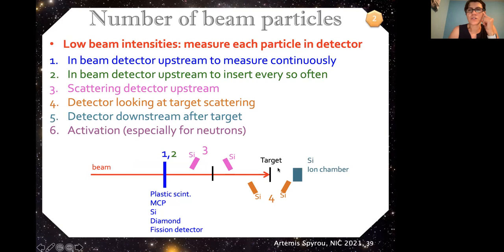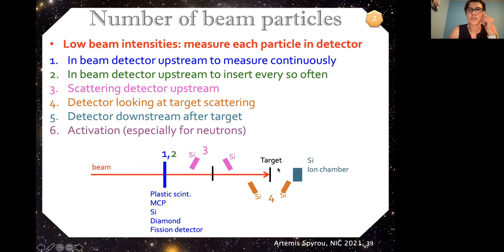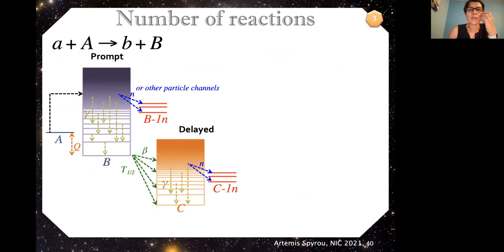And you could also do activation, especially when we're dealing with neutrons, either with your target itself, or you put a foil upstream or downstream from your target. And then you just look at the cross section, basically, and you look at that activation. So that's briefly how we deal with a number of target particles and number of beam particles.